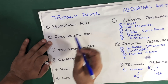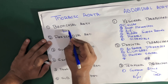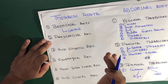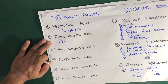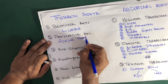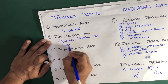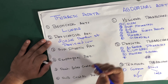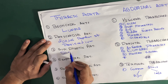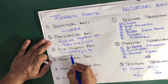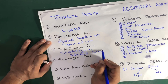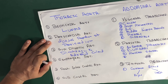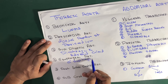The bronchial artery, as the name suggests, supplies the lungs. The pericardial artery supplies the dorsal portion of the pericardium. The superior phrenic artery supplies the diaphragm and adrenal glands. The esophageal artery supplies the esophagus.